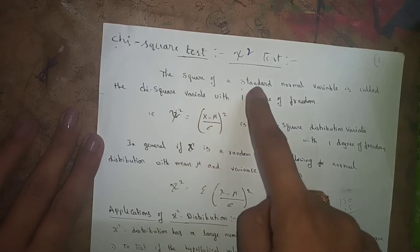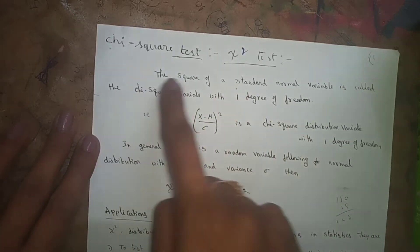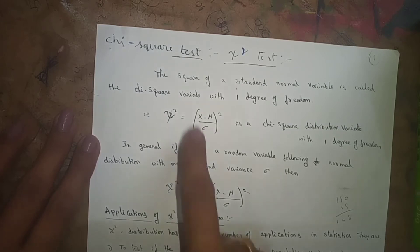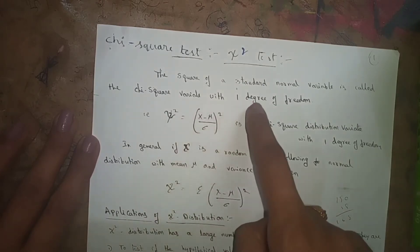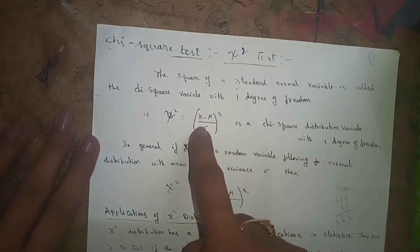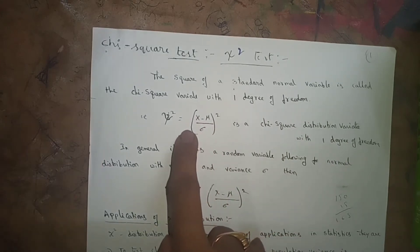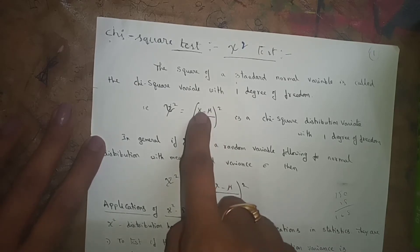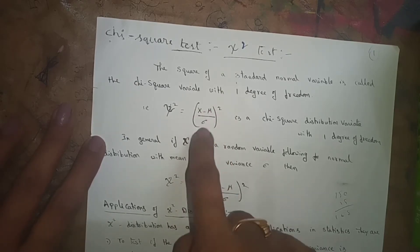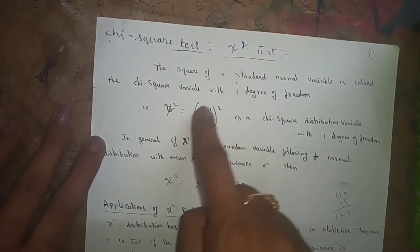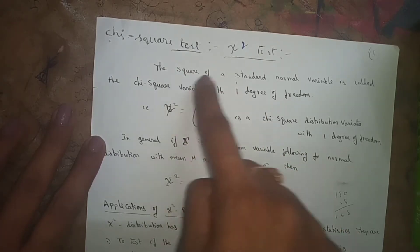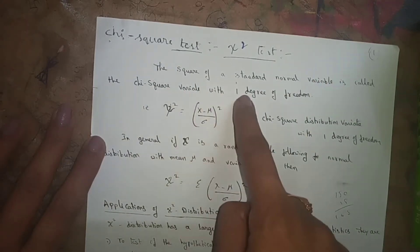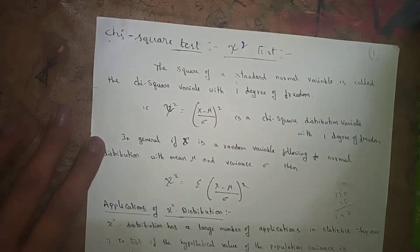The square of a standard normal variable is called a chi-square variate with one degree of freedom. As everyone knows, (x minus mu) divided by sigma is called the standard normal variate. So (x minus mu) divided by sigma, whole squared — the square of the standard normal variable — is called chi-square variate with one degree of freedom.